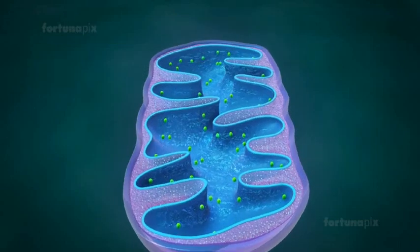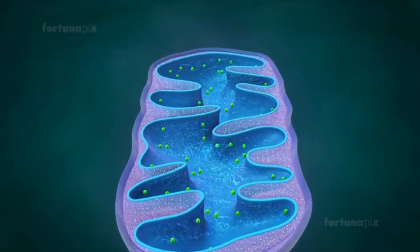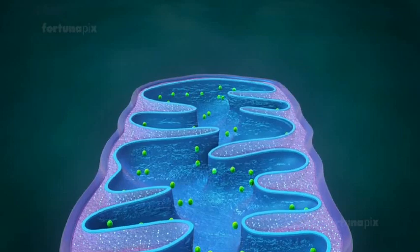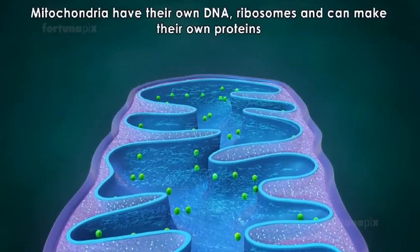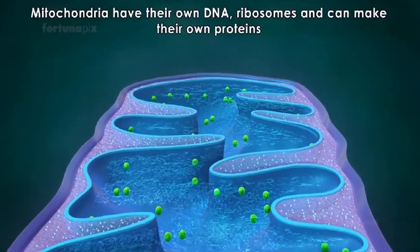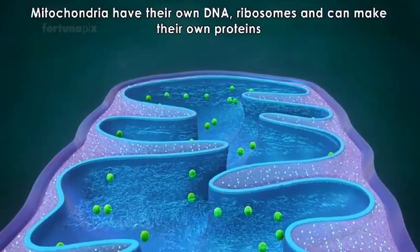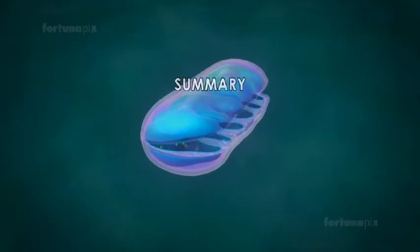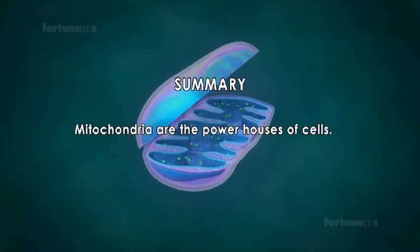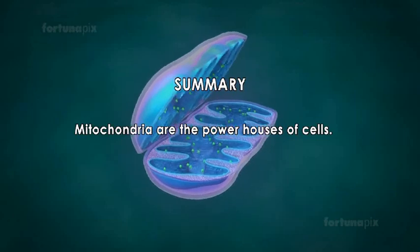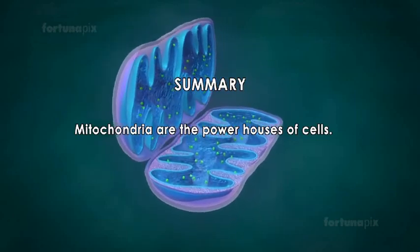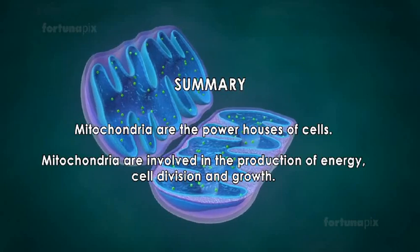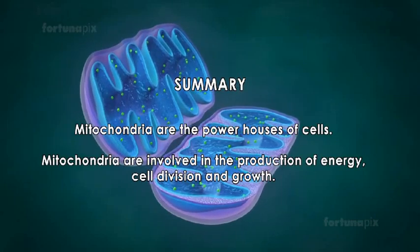Mitochondria are semi-autonomous: they are partially dependent on the cell to replicate and grow, but they have their own DNA and ribosomes and can make their own proteins. In summary, mitochondria are the powerhouses of cells, involved in energy production, cell division, and growth.